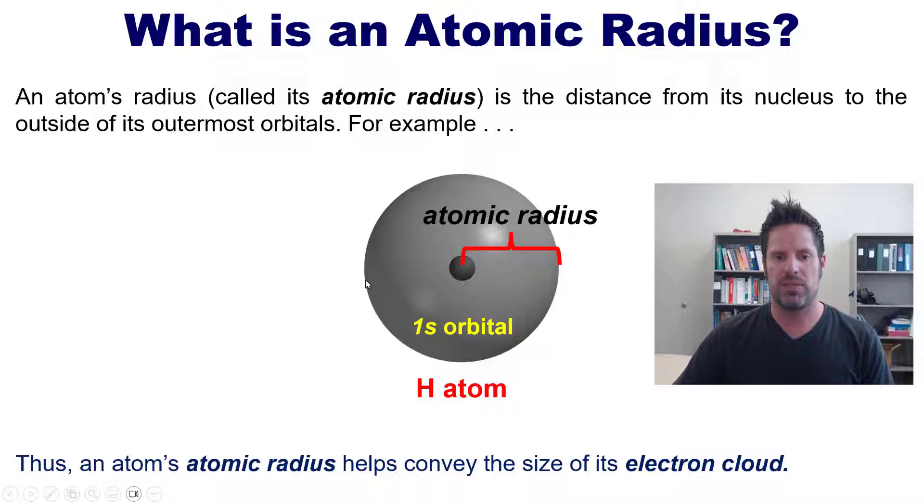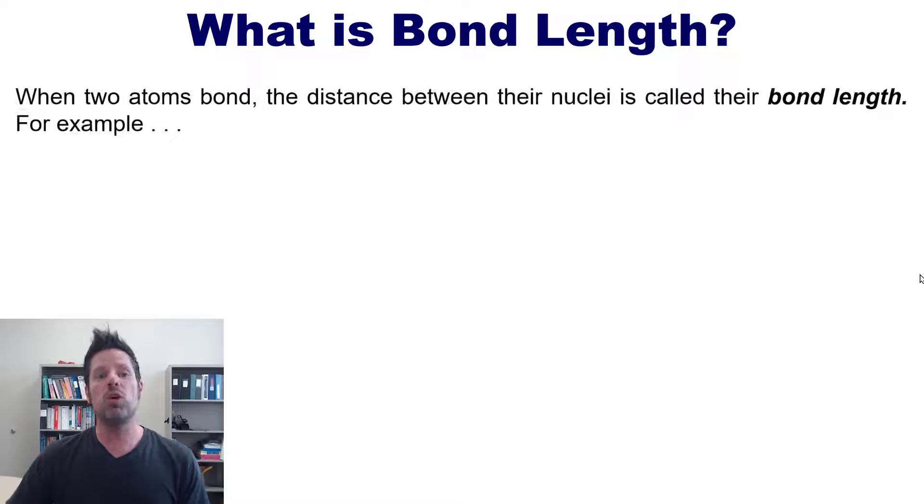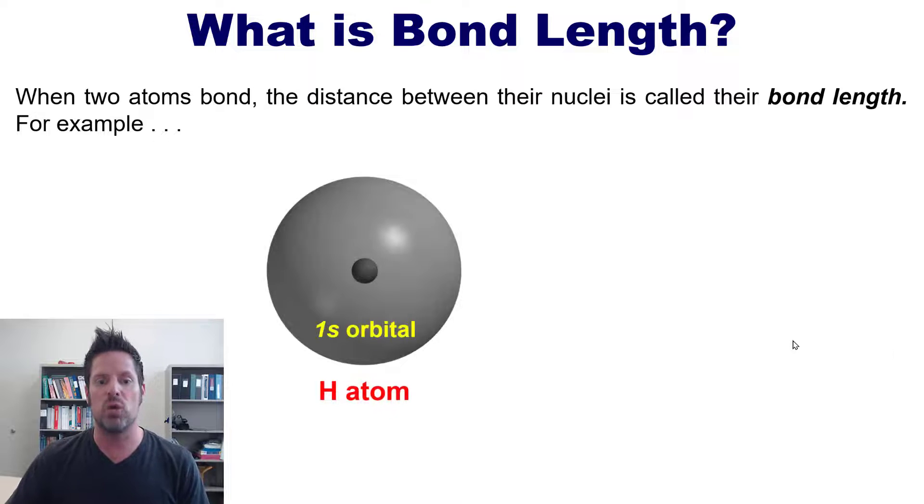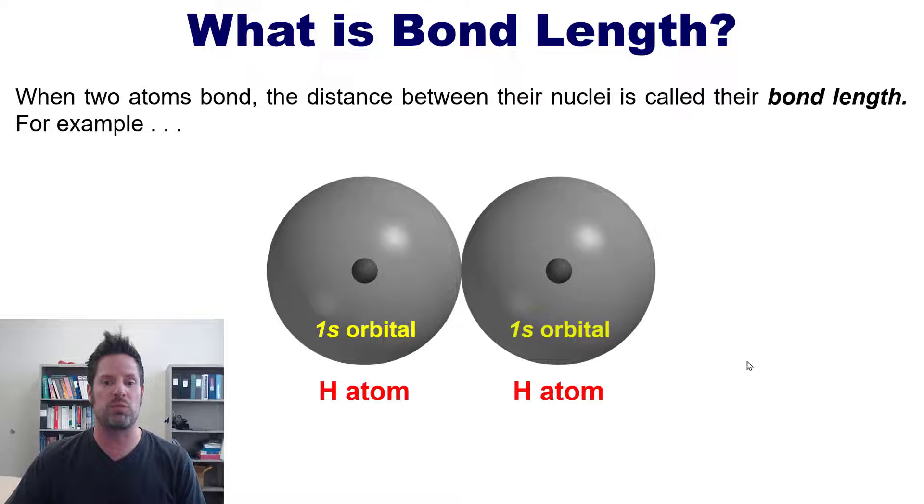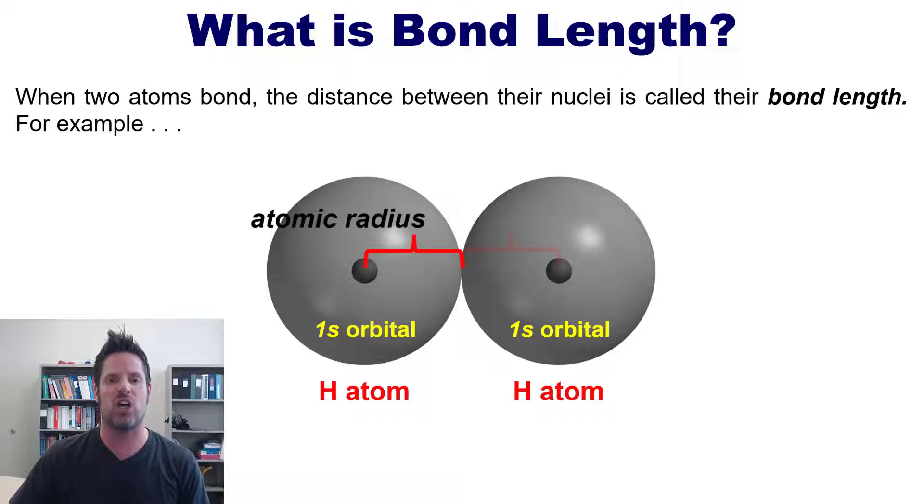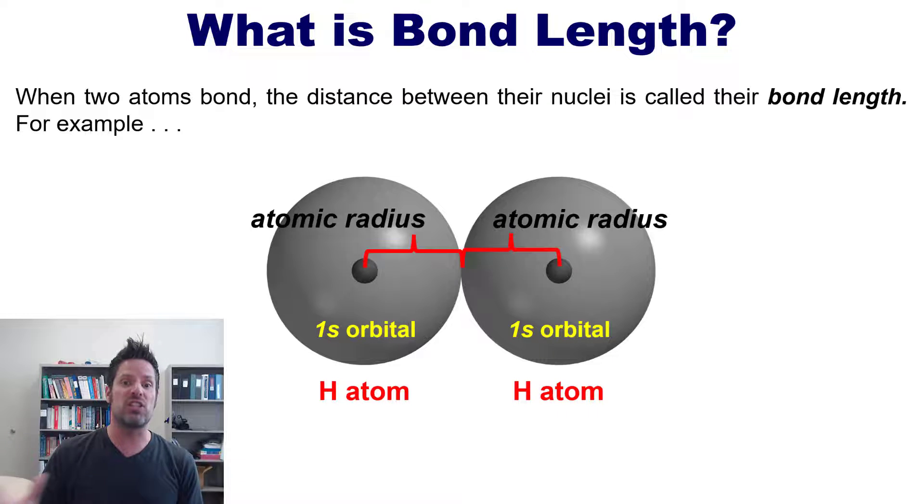An atom's atomic radius helps convey the size of its electron cloud, this region of space occupied by its electrons. Now, what is a bond length? When two atoms bond, the distance between their nuclei is called the new molecule's bond length. For example, when I have two hydrogen atoms, each with their respective 1s orbitals, come together and bond, each of them individually has its own atomic radius.